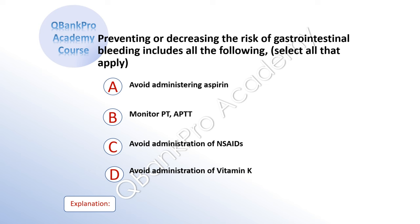Preventing or decreasing the risk of gastrointestinal bleeding includes all of the following. Select all that apply. A: avoid administering aspirin. B: monitor PT and APTT. C: avoid administration of NSAIDs. D: avoid administration of vitamin K.